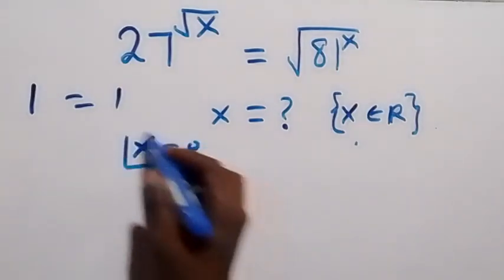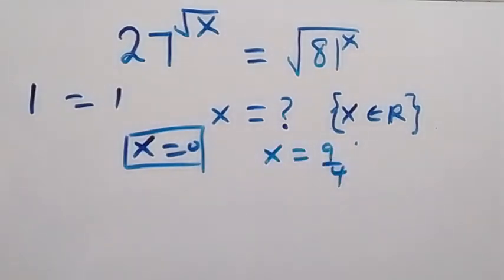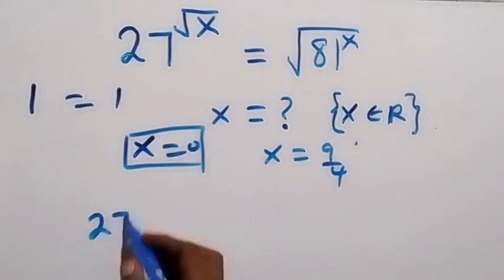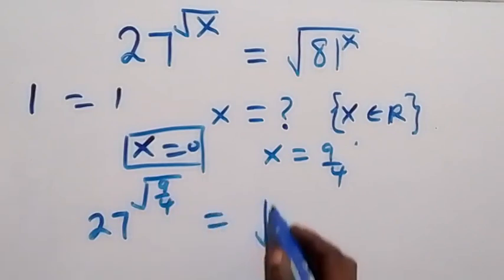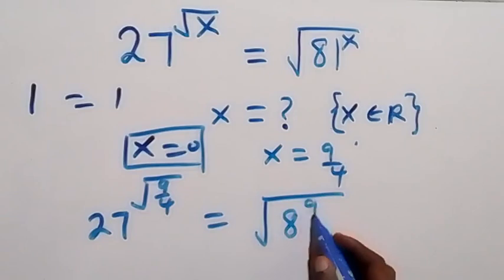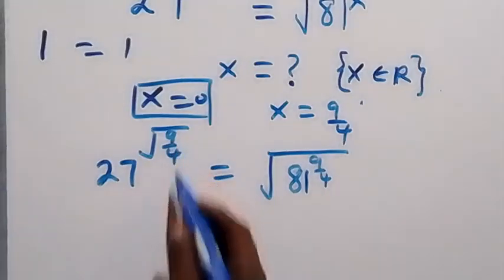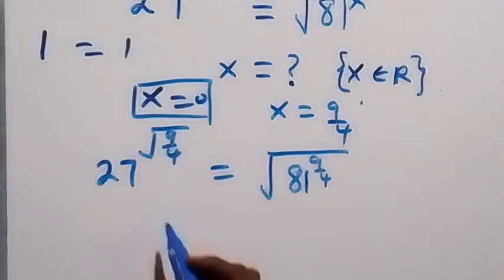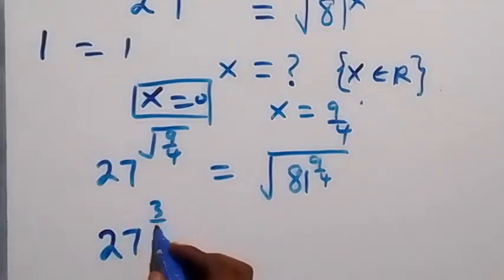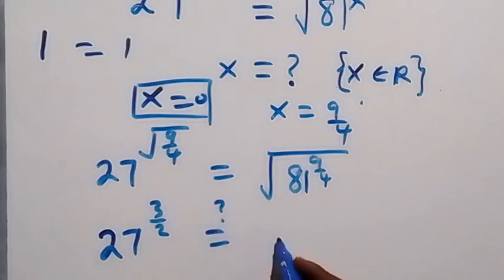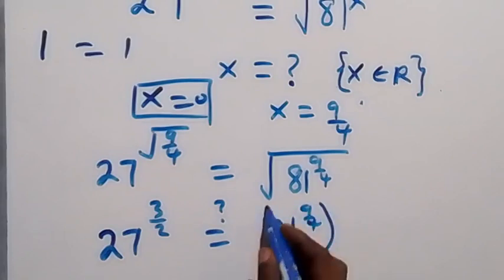For x equals 9 over 4, we substitute and get 27 raised to power root(9/4) equals root of 81 raised to power 9/4. Root of 9/4 is 3/2, so the left side is 27 raised to power 3 over 2. The right side becomes 81 raised to power 9/4, raised to power half.